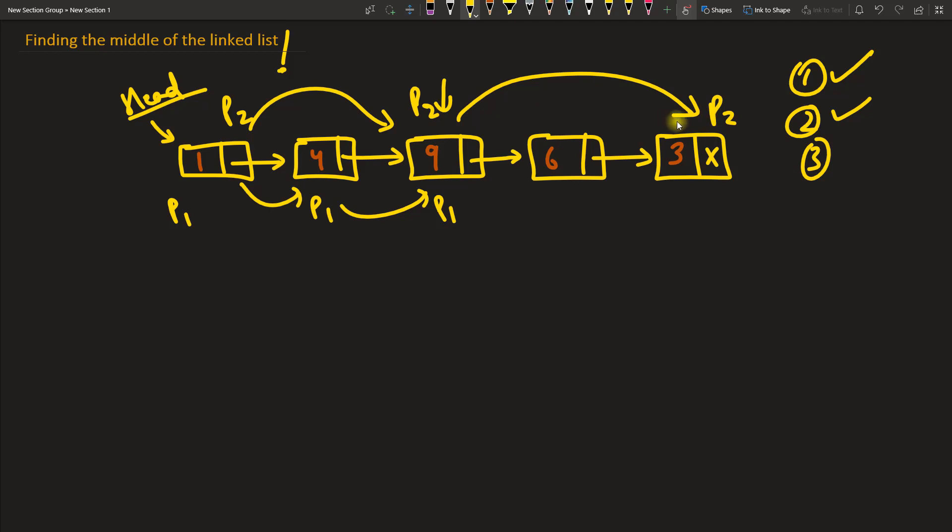Now you see p2 has reached the end, and obviously the logic would be you will keep jumping and you will see that if you reach the end then you will stop. So this p2 has already reached the end, then wherever this p1 would be, that is going to be the center. We can see that this is the center and p2 is at the end.